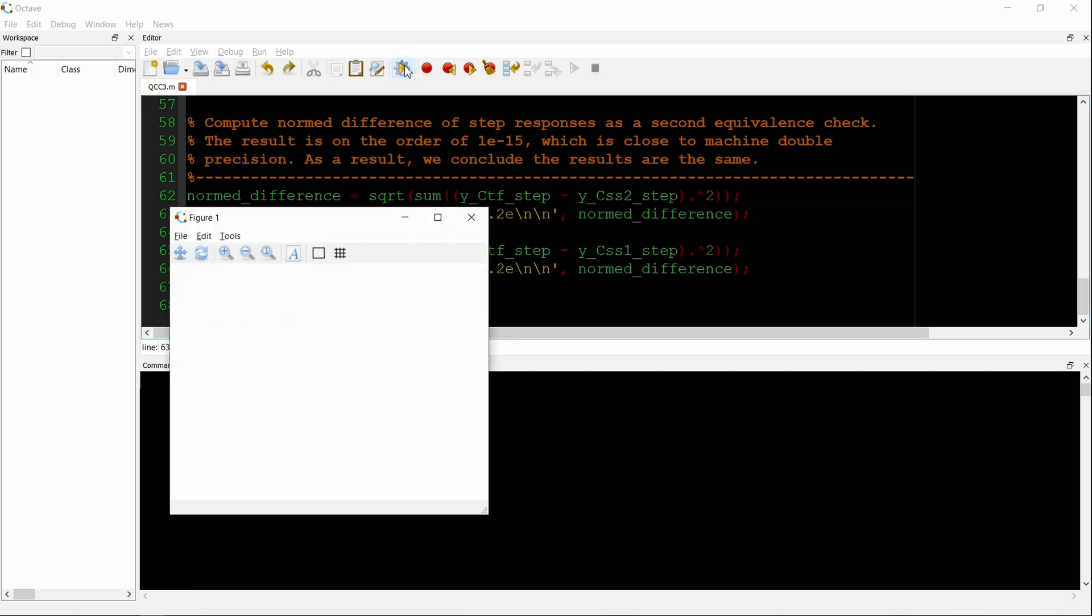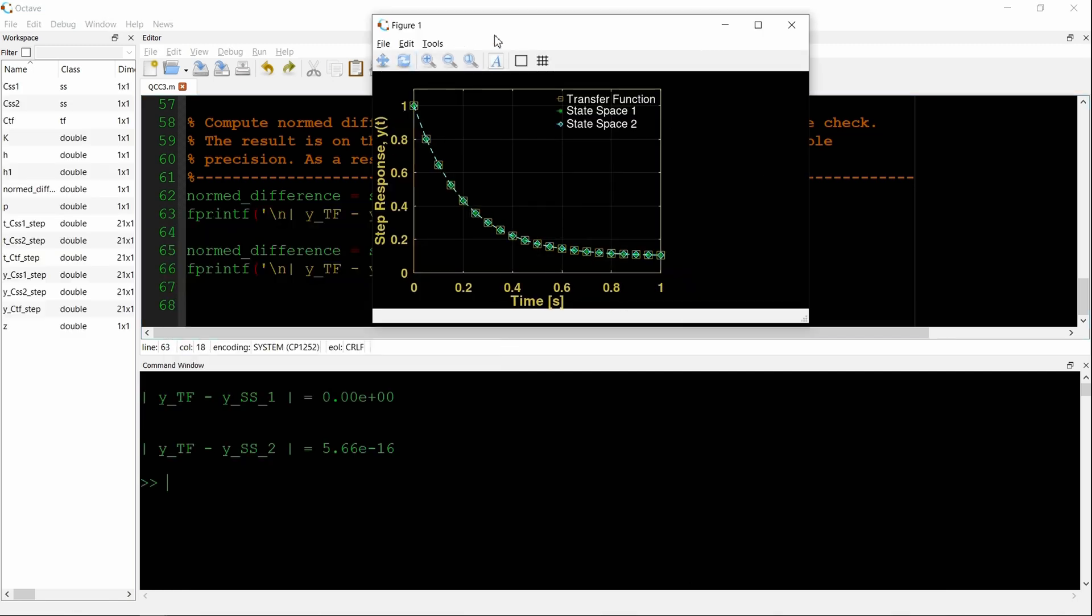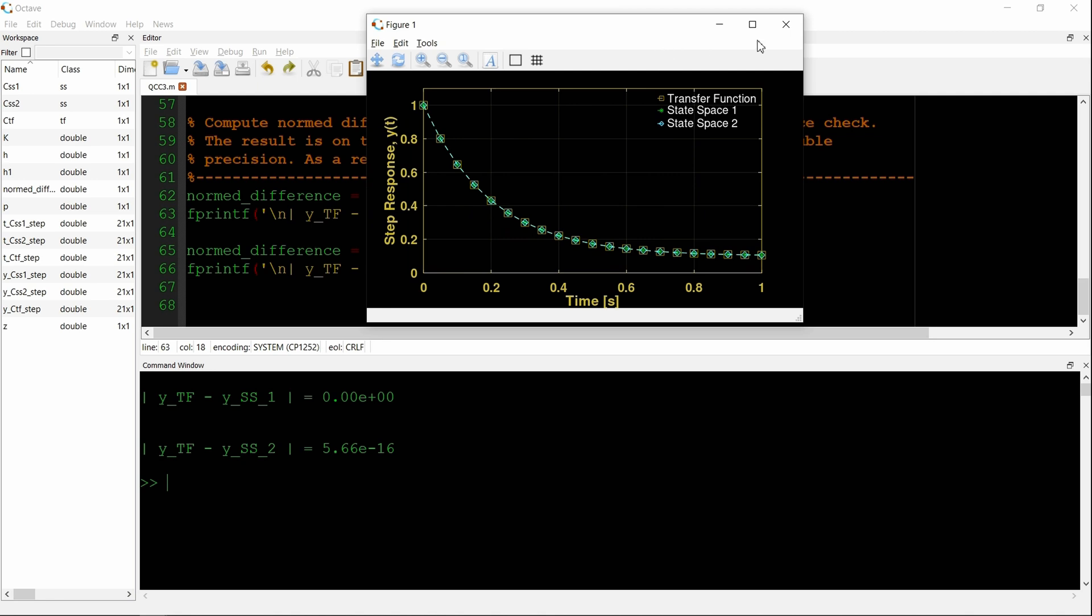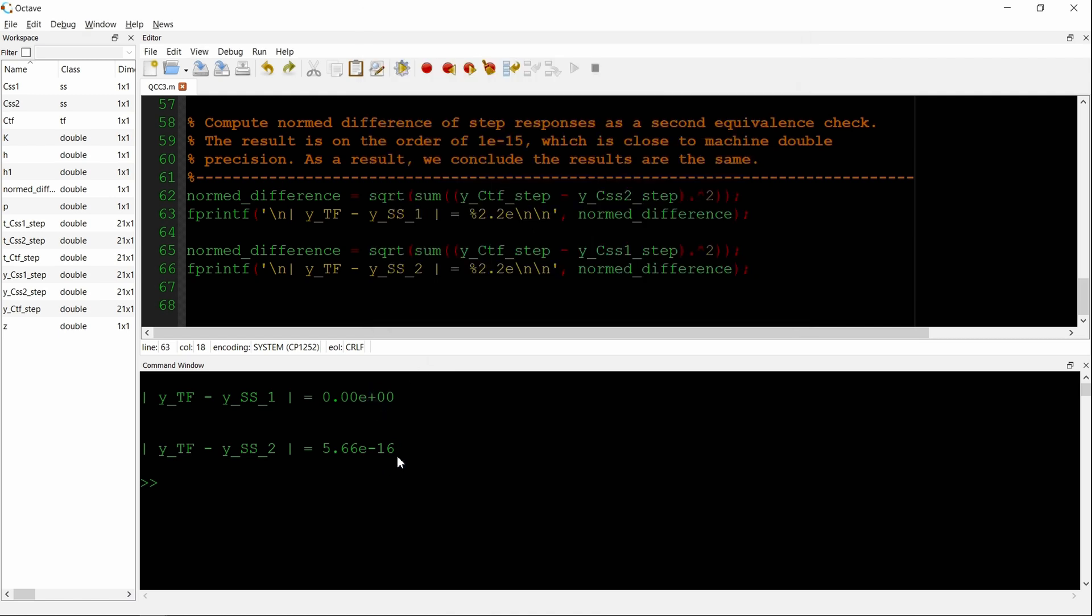Now we run the script. Here's a step response versus time for each system, the transfer function, and both state-space systems. Now by inspection, everything is on top of itself. The markers are overlaid. And in the command window, we've printed out the errors, which are 0 or at machine precision.